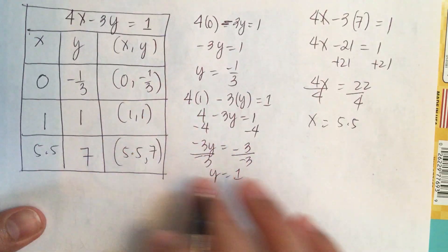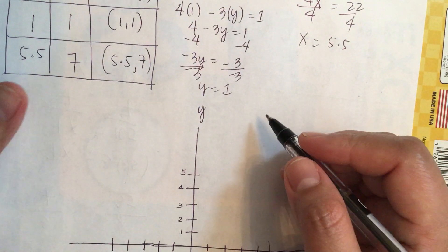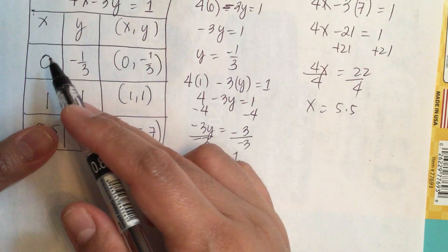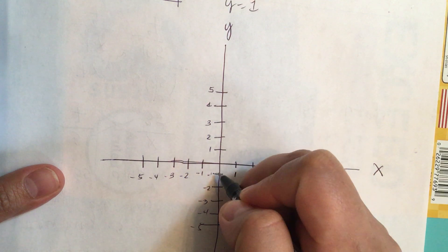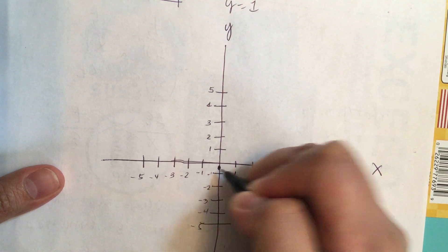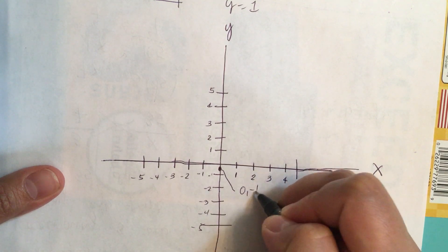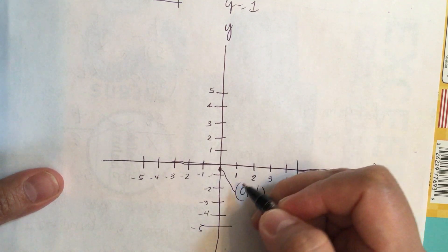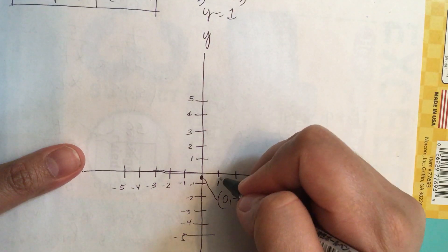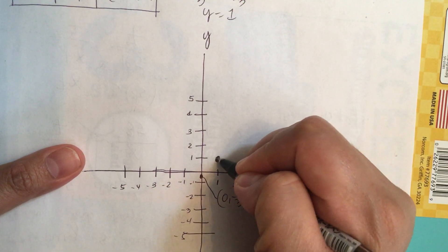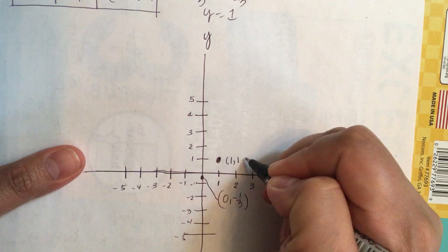So we have 3 points, so we can graph them here. When x is 0, y is negative one-third, so it's about right here. This is the point 0 comma negative one-third. And then when x is 1, y is 1, so this is the point 1 comma 1.